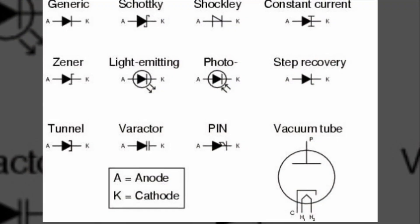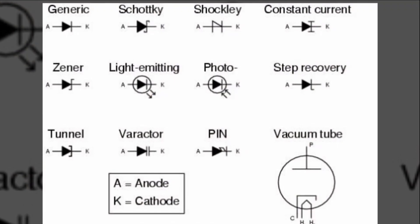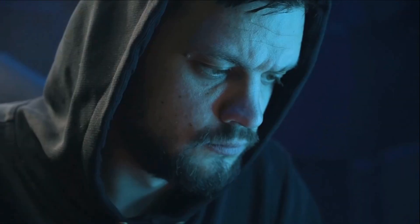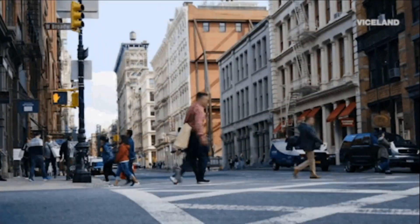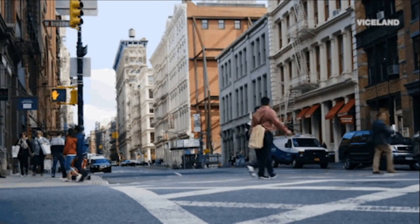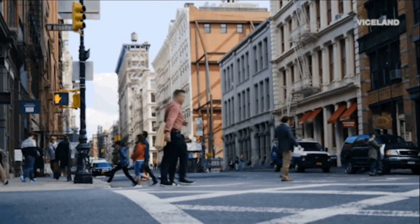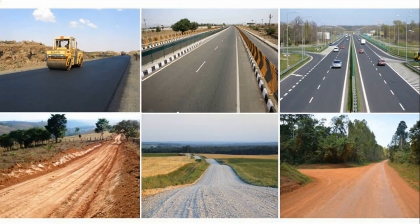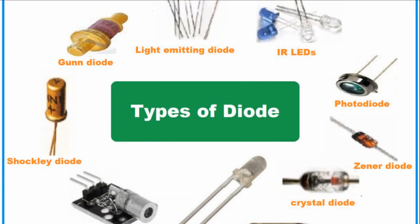Each of these diodes serves a unique purpose in the vast world of electronics. Just as you use different types of roads — highways for fast travel, city streets for local destinations, and dirt roads for off-roading adventures — diodes also have their specific roles in electronic circuits. There are different types of diodes, each with their unique function.